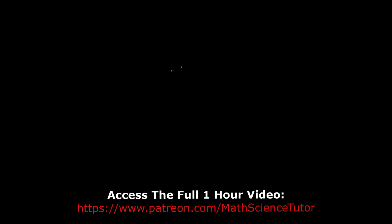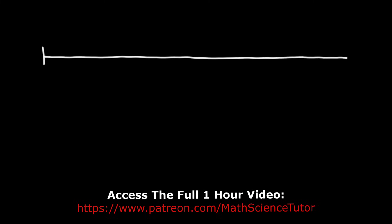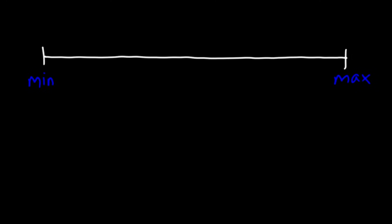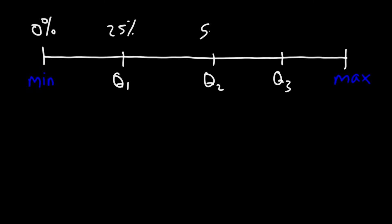Now let's talk about finding the quartiles and the interquartile range. I'm going to make a number line with a beginning and an end representing our data. The lowest value is known as the minimum and the highest value is the maximum. We're going to break this number line into four equal parts. The first part is Q1 — the first quartile; then Q2, the second quartile; and Q3, the third quartile. If the data were normally distributed, these would correspond to the 0%, 25%, 50%, 75%, and 100% levels.